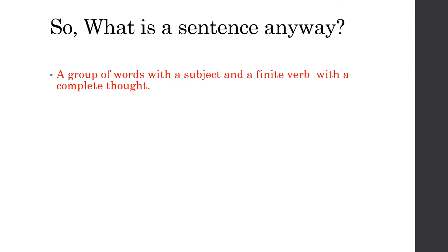So we have now understood what is a sentence. What we have come up with is: a group of words with a subject, a finite verb, and a complete thought. When we say finite verb, we mean that it changes according to tense and also according to number or gender. So a group of words with a subject, a verb, and a complete thought is a sentence.